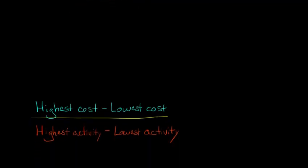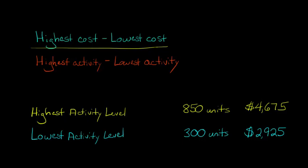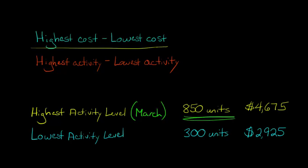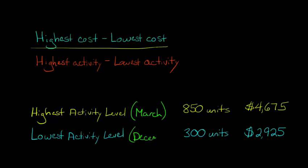Let me just break down and show you a concrete example. Let's say our highest activity level — for the year, we measure how many units we produce and what the cost is for each month. The month where we produce the most units, we have 850 units, and let's say that's the month of March. That's our highest activity level. Then our lowest activity level — let's say that's December — where we produce 300 units. The other months don't matter because we just need a couple of sets of coordinates.